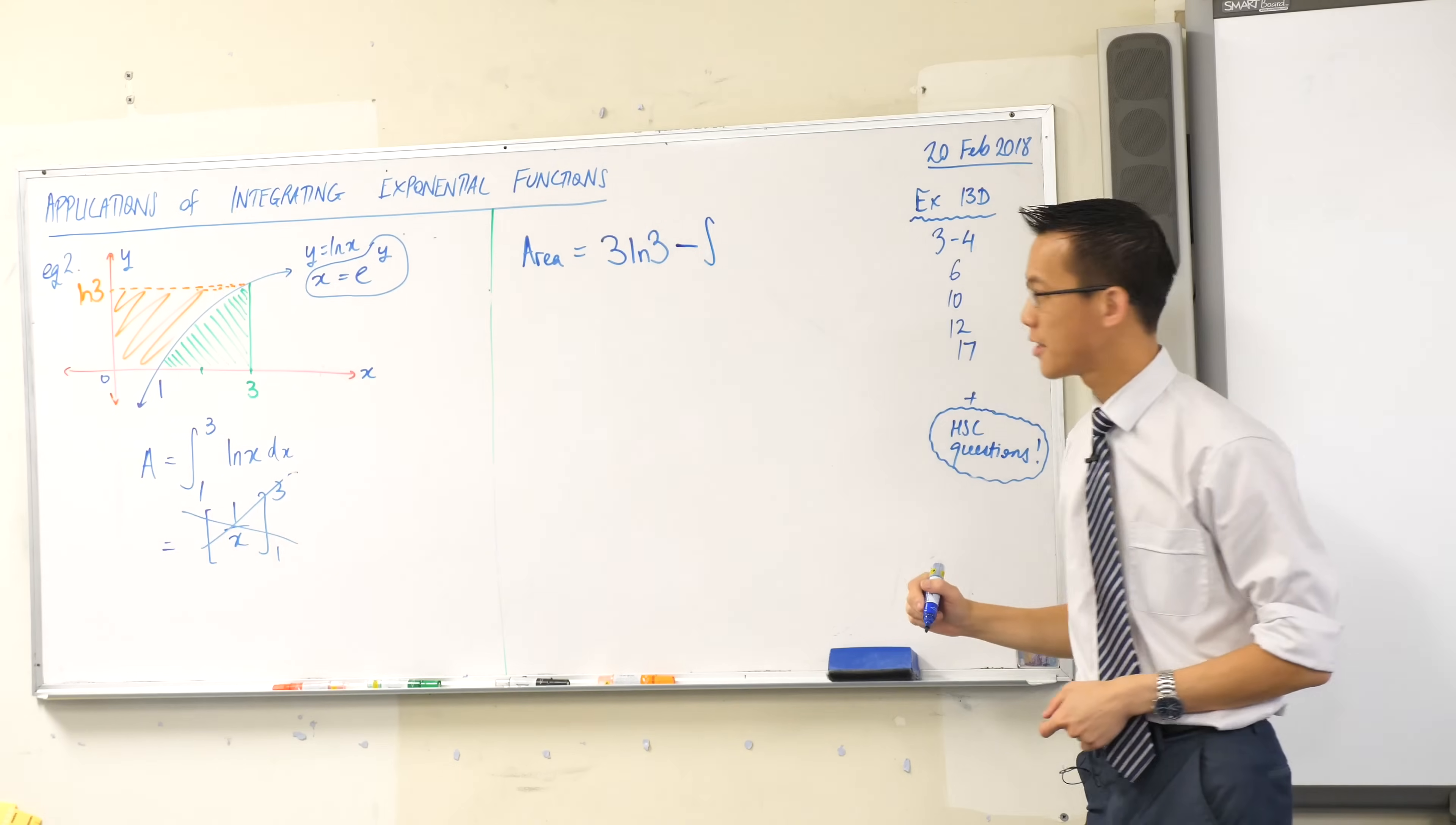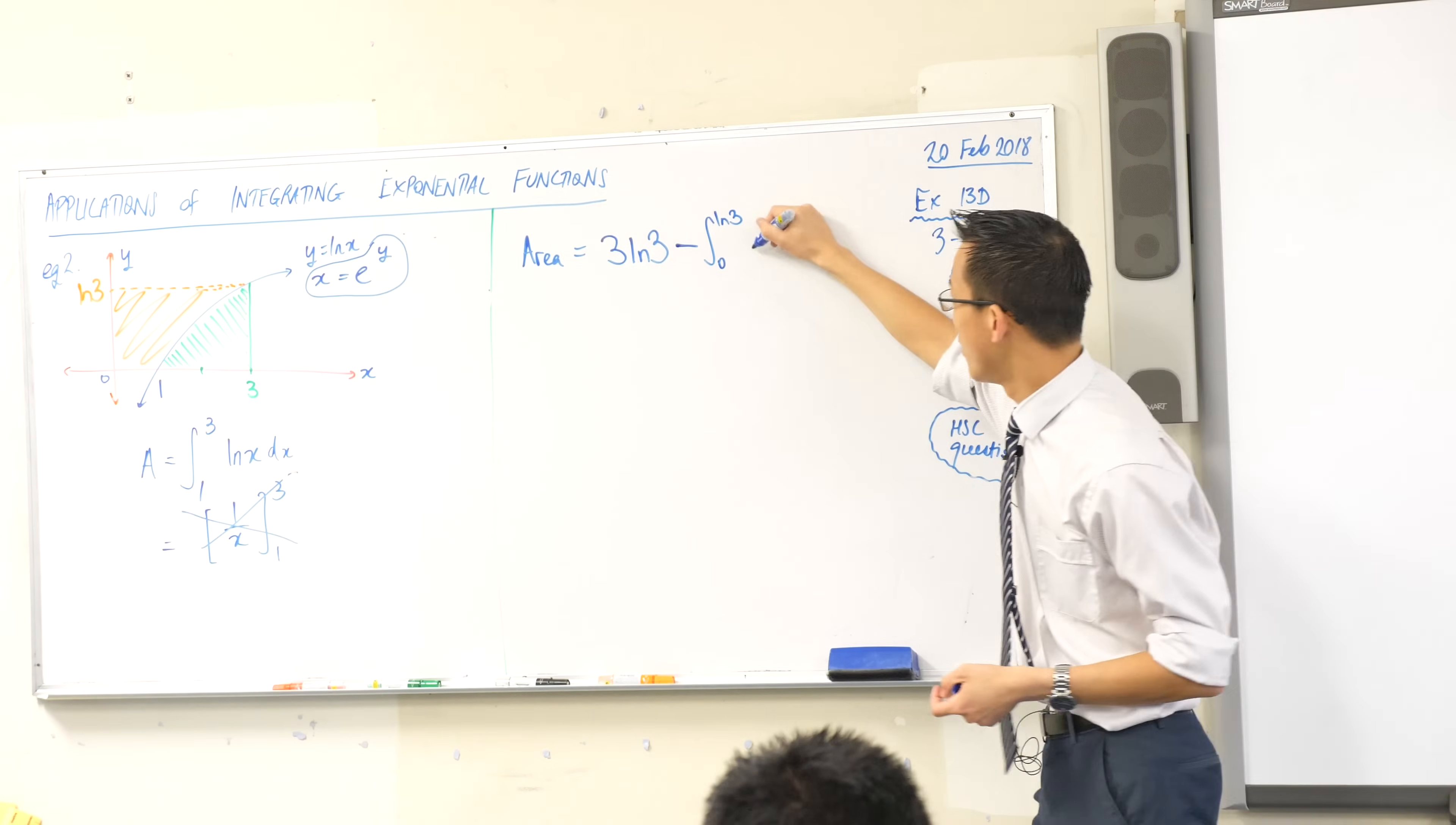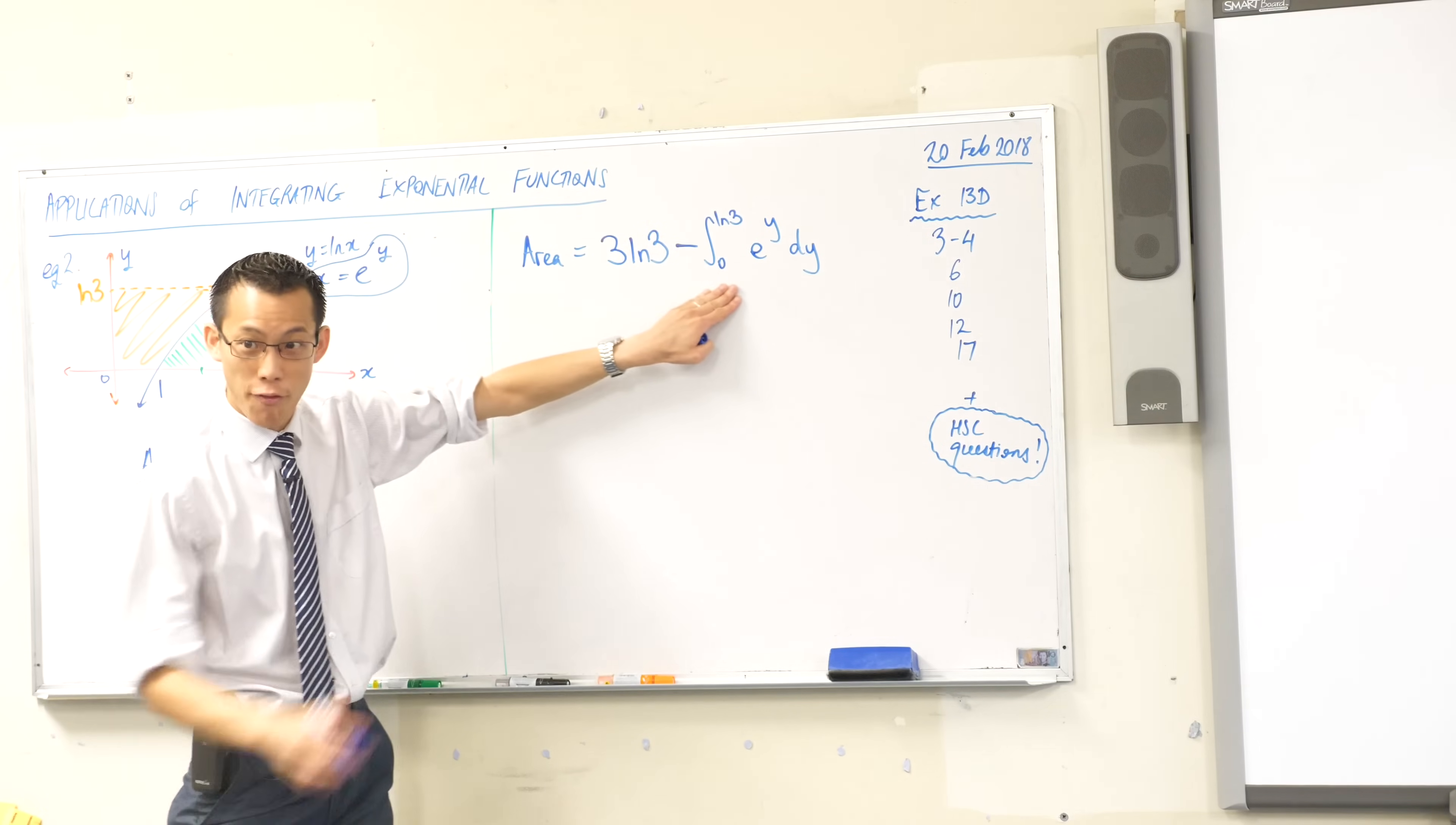So subtract the orange area that I'm about to find, is that okay? You just told me the y boundaries from 0 to log 3, and in here I'm gonna write the function of y, right, which you guys told me before to help this out, it's e to the y dy, is that okay?